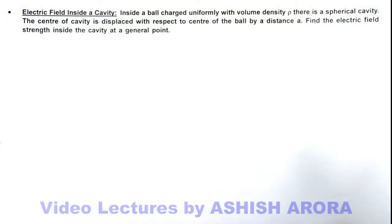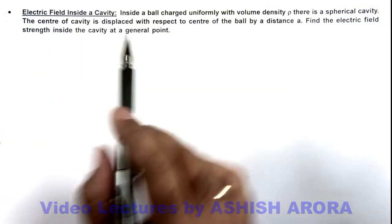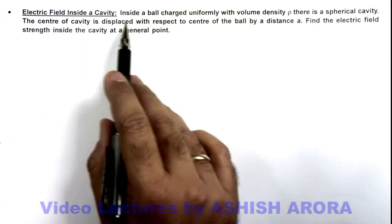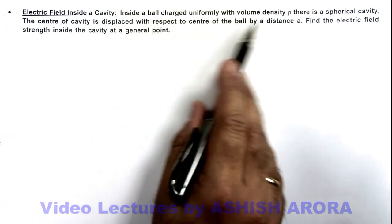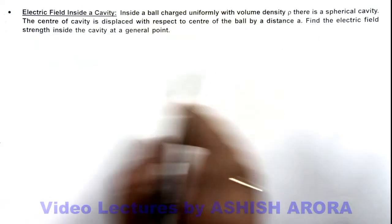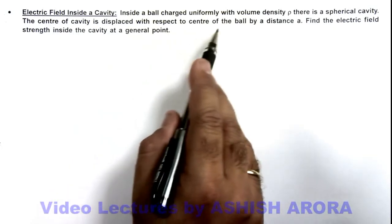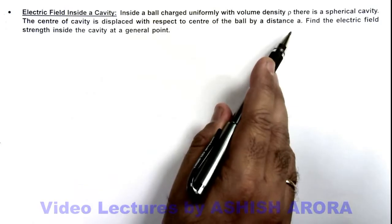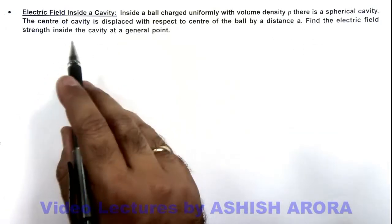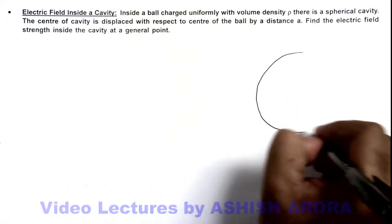In this illustration, we'll study about electric field inside a cavity. The situation says: inside a ball charged uniformly with volume density ρ, there is a spherical cavity, and the center of the cavity is displaced with respect to the center of the ball by distance a. We are required to find the electric field strength inside the cavity at a general point.